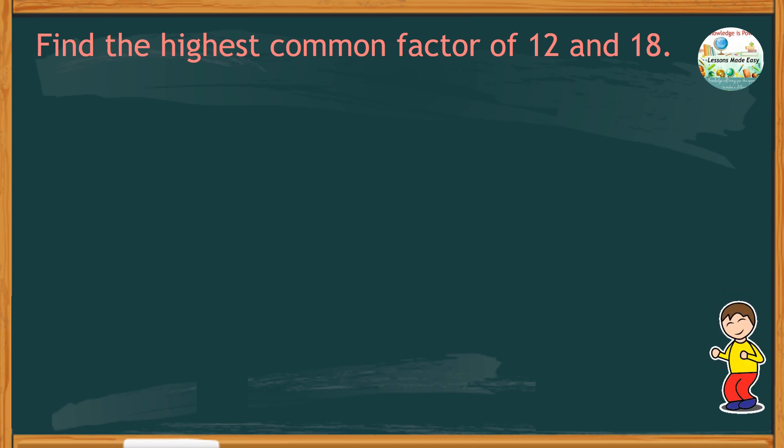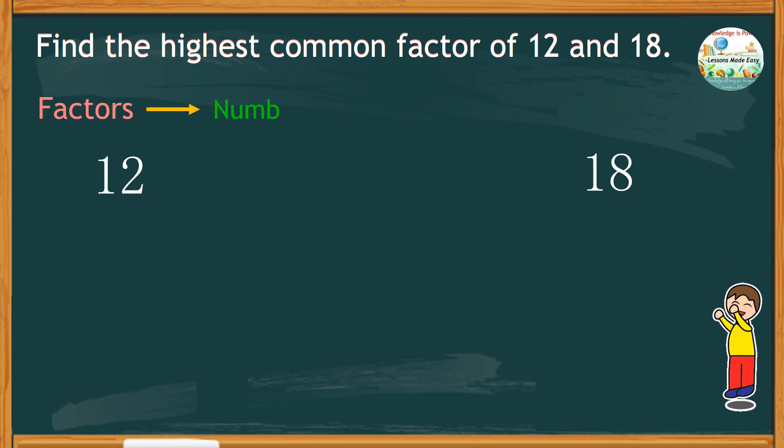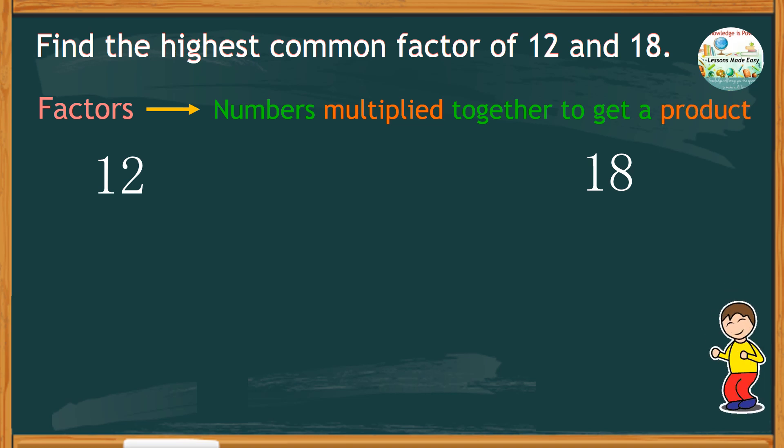Let's work on the first example. Find the highest common factor of 12 and 18. First, we have to find the factors of each number. When we say factors, these are the counting numbers multiplied together to get a product. In this case, the product is the target number, which is 12 and 18.